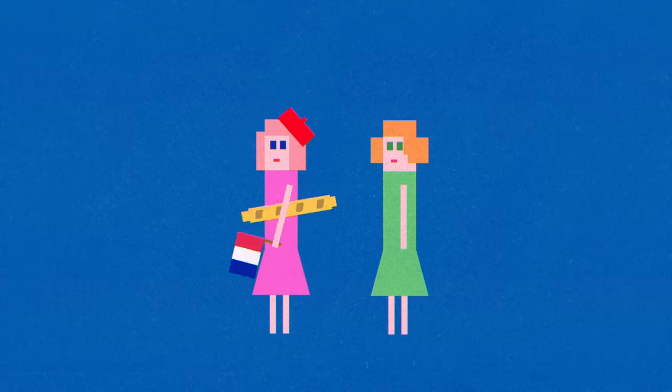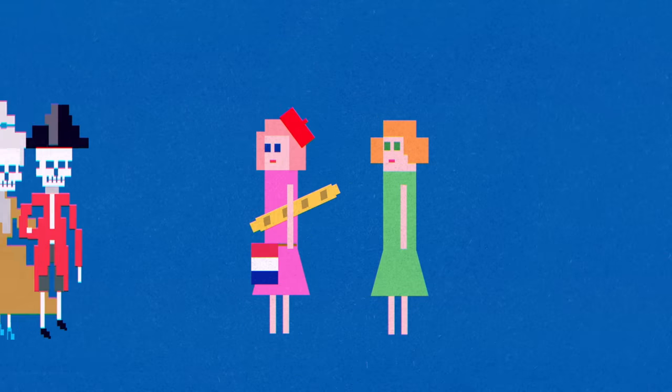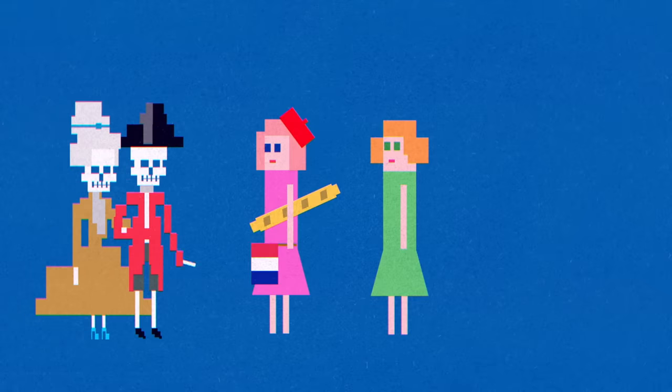So one sister isn't more French, in the sense of having more ancestors from France. Instead, the French ancestors are simply more represented in her DNA.